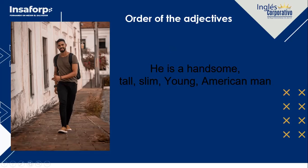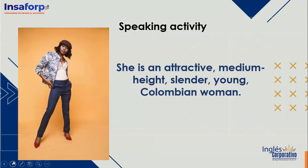Is it easier to say it in one sentence or separately? Esa segunda forma es más fácil — yes, it is, so you can use it too. Look at this other example: She's an attractive, medium height, slender, young, Colombian woman. All her characteristics in just one sentence. But don't forget to follow the right order of adjectives.